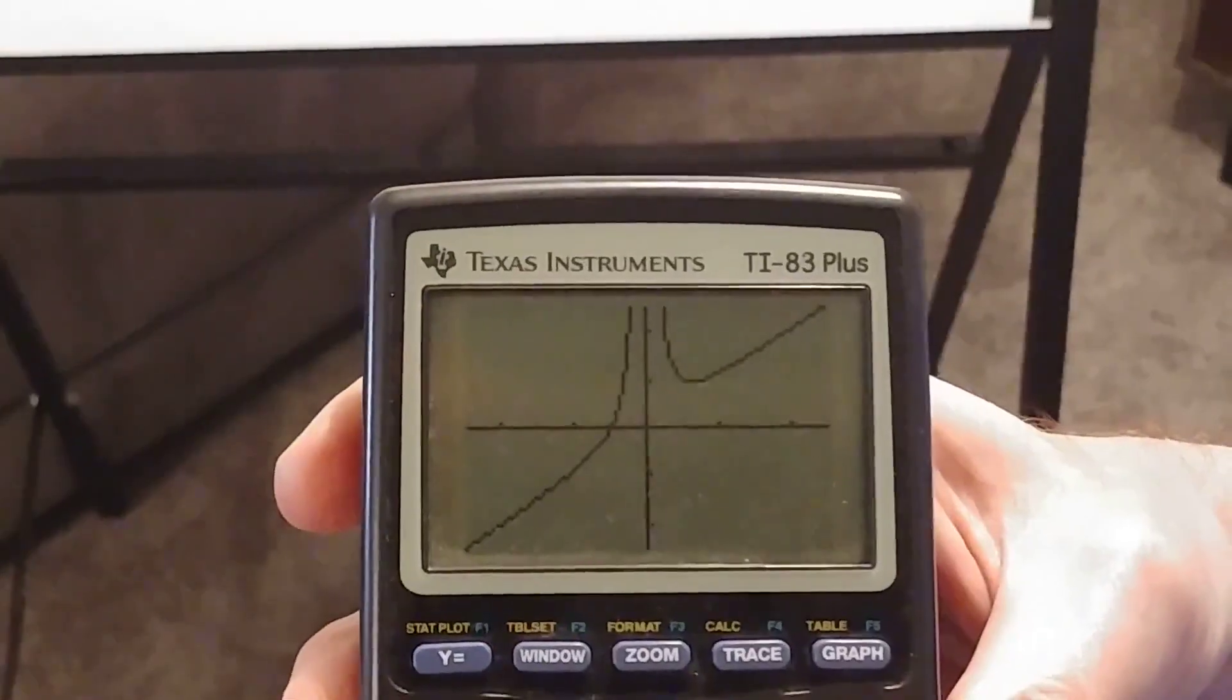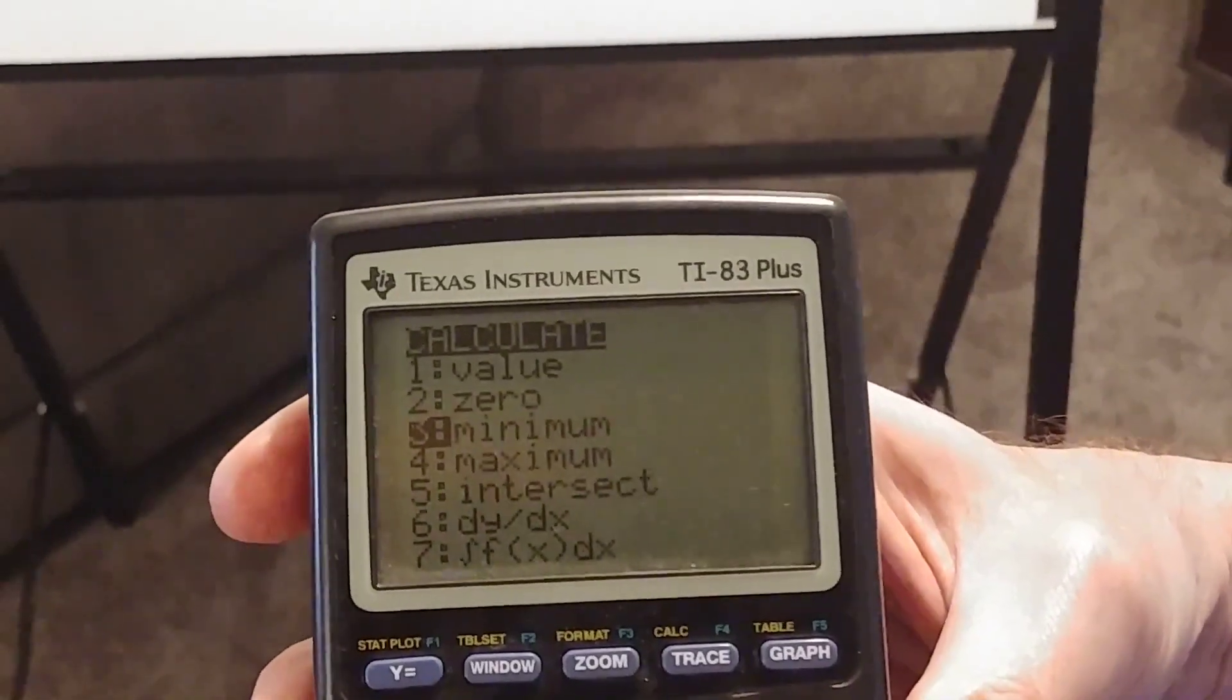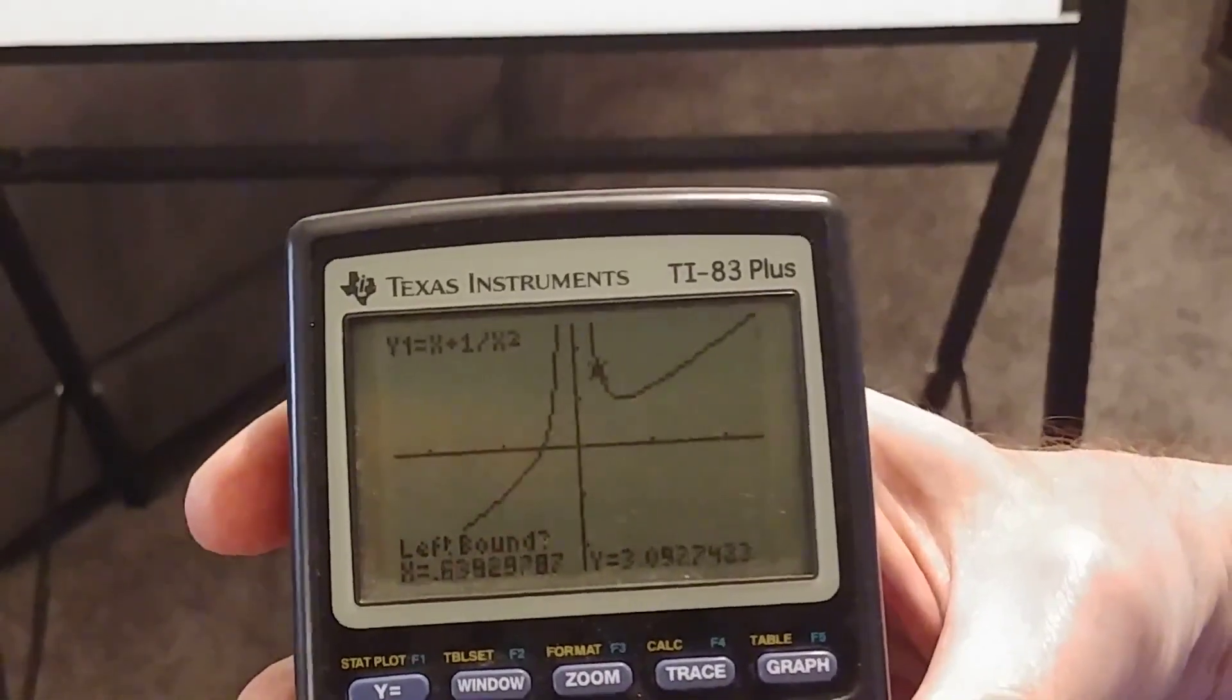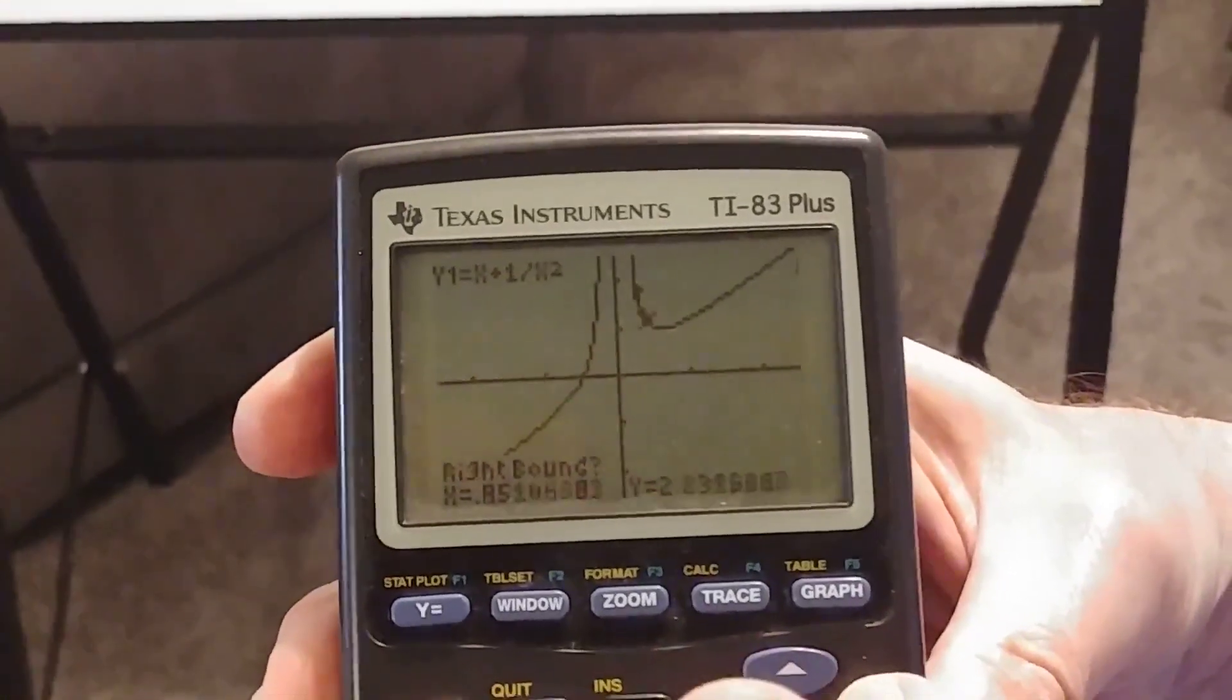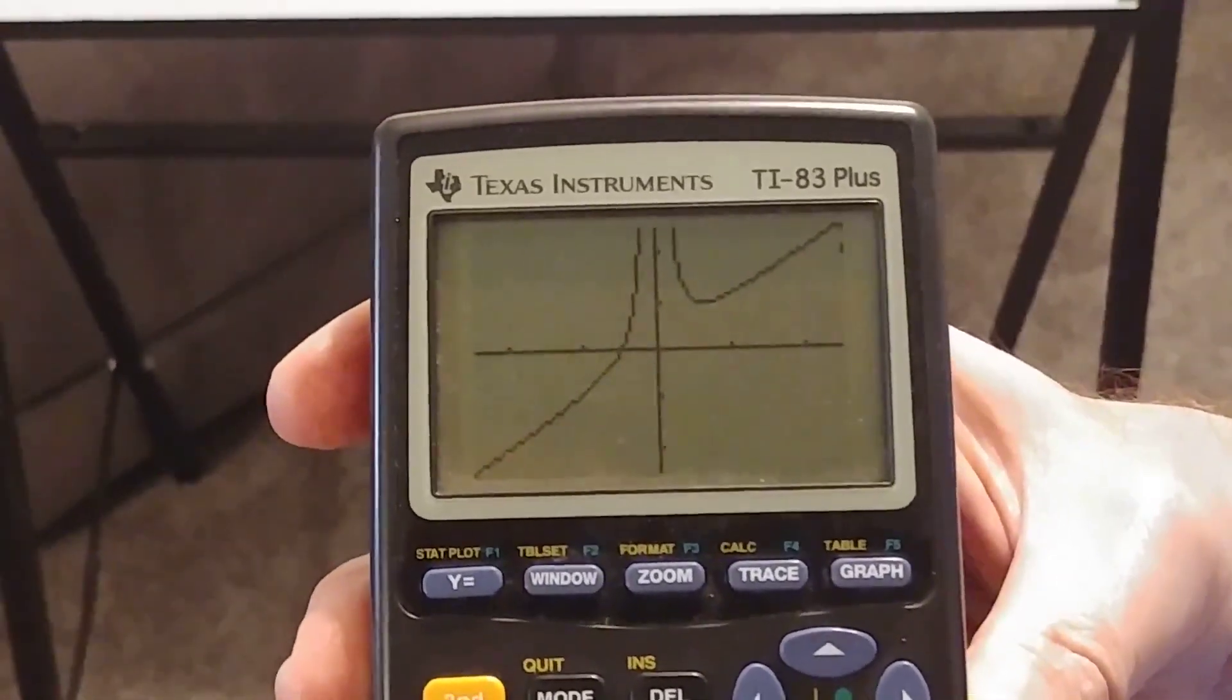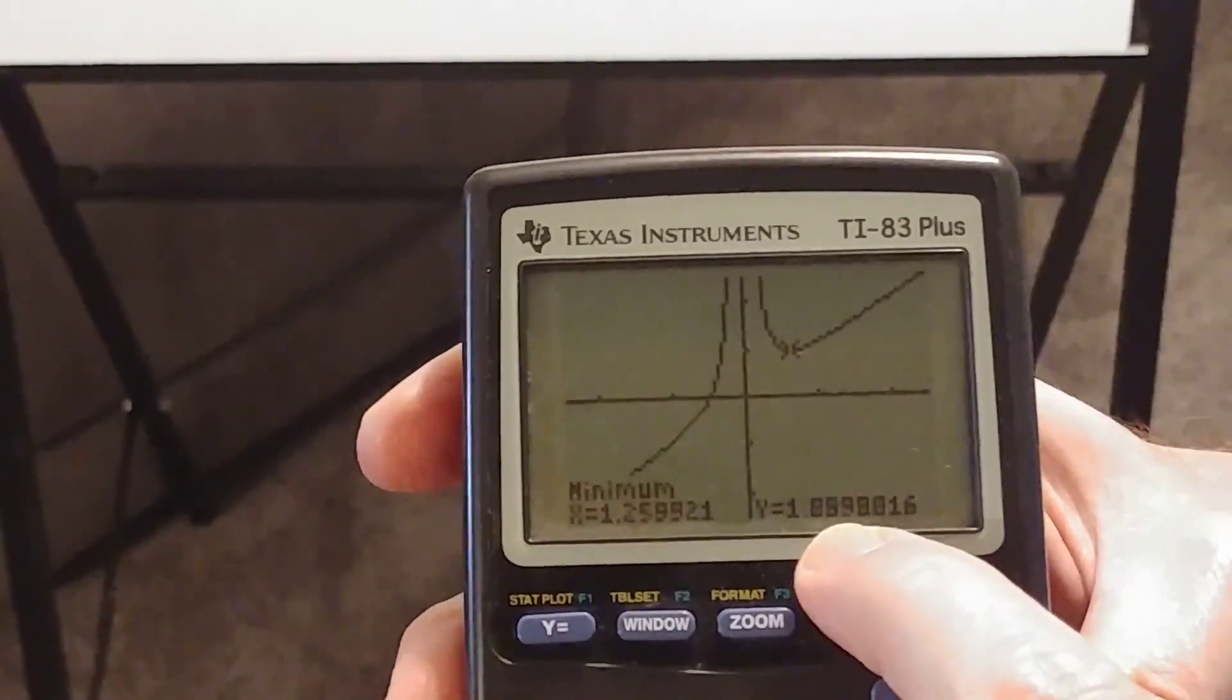Now we can calculate that value by using some keys on the calculator. I'll scroll down to the minimum and then if I move the cursor just a little bit to the left of the minimum and then move it a little bit to the right of the minimum, the calculator will calculate the minimum value and they give us x equals about 1.26 and y equals about 1.89.